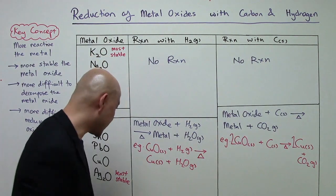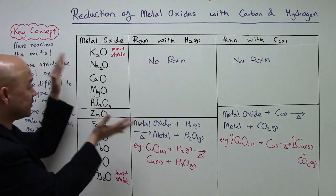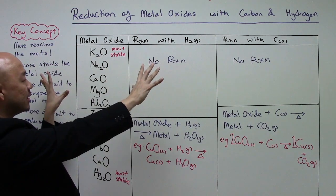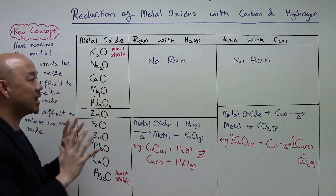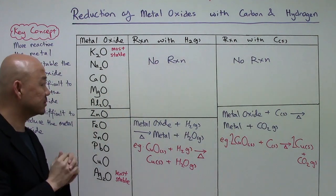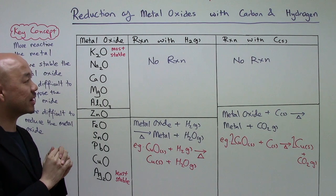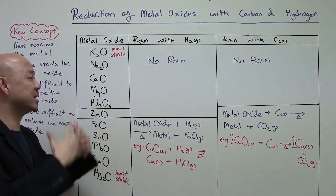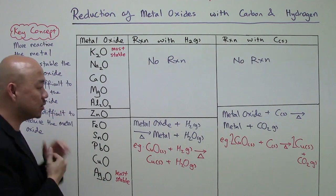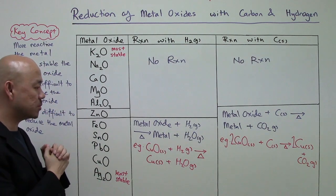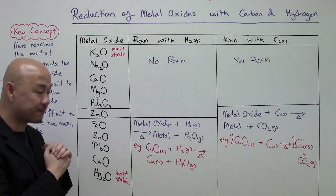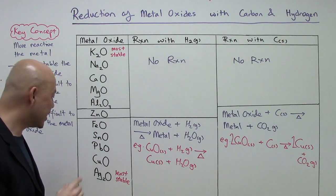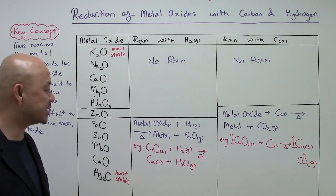As you can see, the metals at the top have more stable oxides and will not be reduced by the reducing agents hydrogen gas or carbon, whereas those lower down will be reduced because their oxides are less stable.